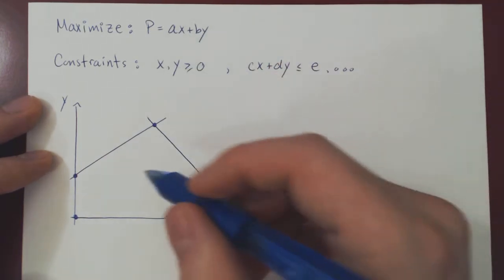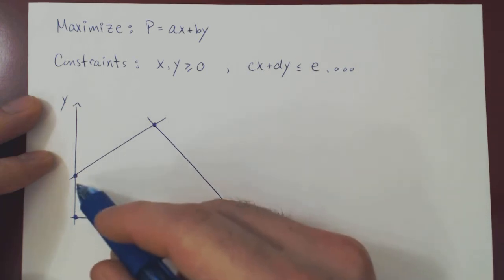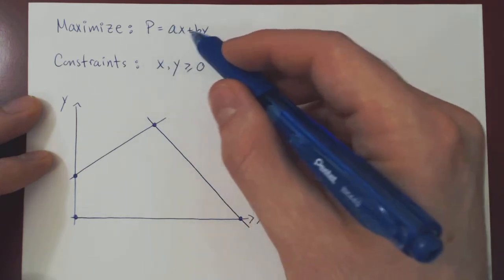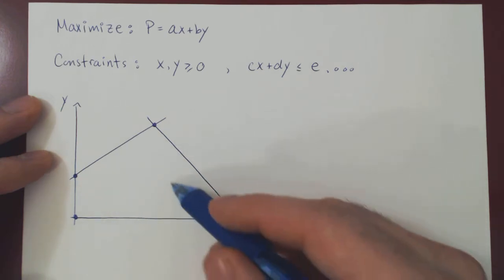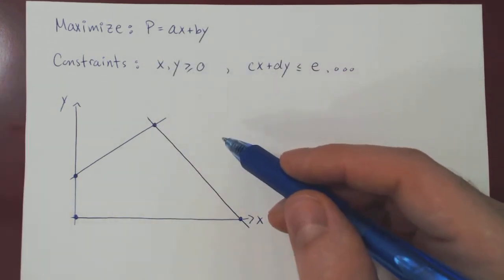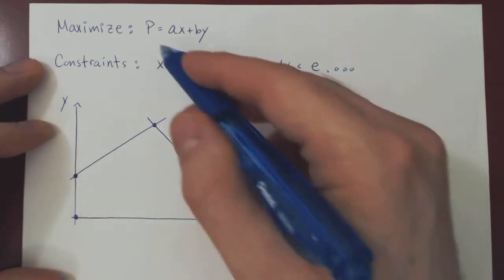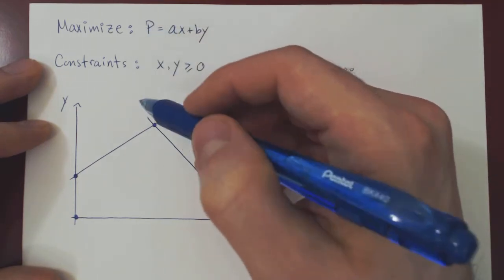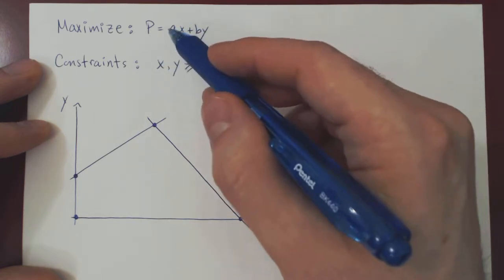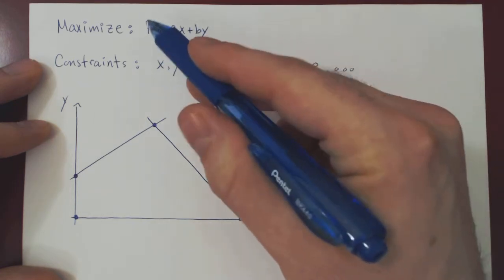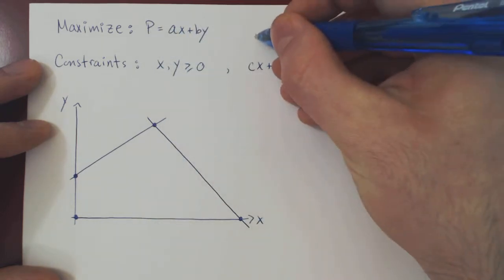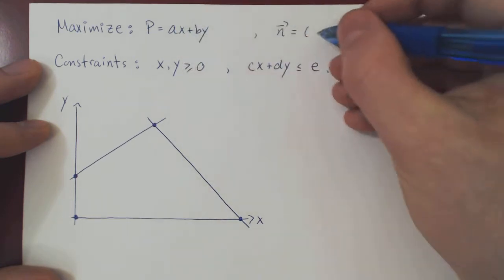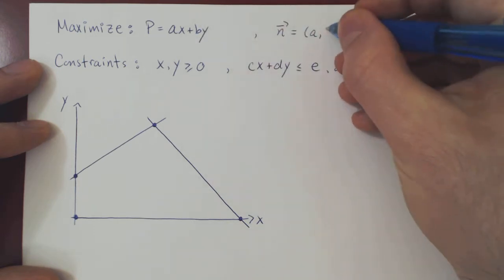Geometrically, we have to look for a value of x and y giving a point inside our feasible region that will maximize the function p given by ax plus by. Where do we look inside our feasible region to maximize this function? This is the key question. How can we visualize the objective function within our feasible region? If you fix a value of p, the equation a times x plus b times y equals a constant is the equation of a line in the xy plane, whose normal vector has x-coordinate being the multiple of x and y-coordinate being the multiple of y.